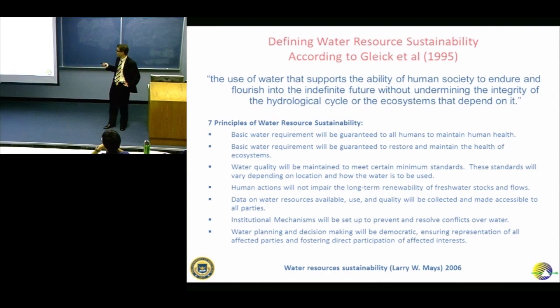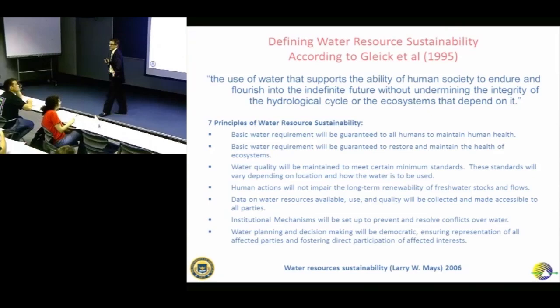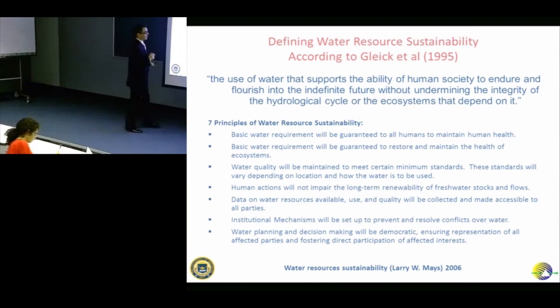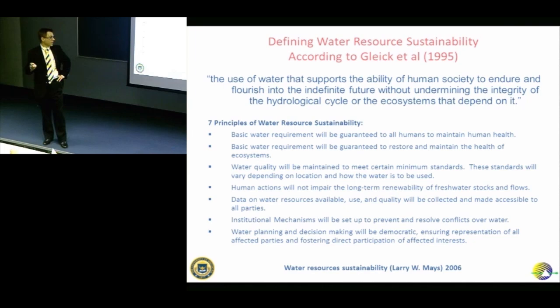What would be an example of a human action that impairs the long-term renewability of fresh water stocks and flows? Building a dam or re-routing water — that would certainly work. Natural gas drilling: if done improperly, it can contaminate groundwater so it can't be used, affecting the fresh water stock. Industrial processes have water concerns — mining might be another example where we'd have concerns about water flow.